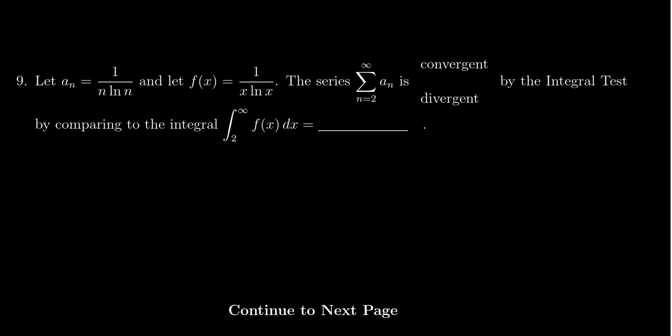We need to determine the convergence of the series, the sum from n equals 2 to infinity of that sequence a_n, that is 1 over n times the natural log of n.